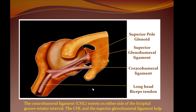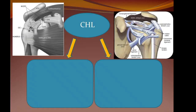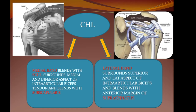The coracohumeral ligament starts, as the name suggests, from the coracoid process and inserts on either side of the bicipital groove, keeping the long head of the biceps in position. The superior glenohumeral ligament starts from the superior pole of the glenoid and merges to form the biceps pulley, as we will see and discuss later. The coracohumeral ligament has two slips before it ends: a medial slip which blends with the SGHL and finally to the subscapularis.